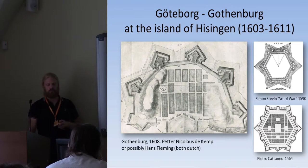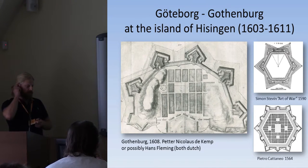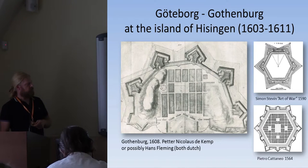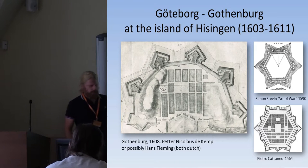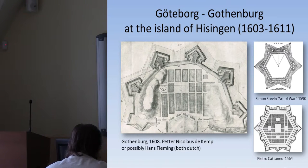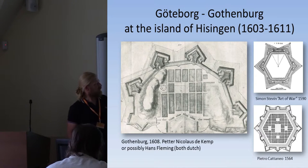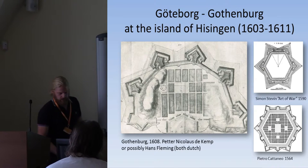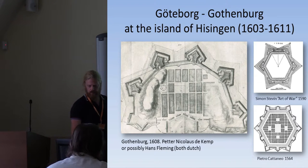The first Gothenburg was at the island of Hisingen. The decision was made in 1603, but building was to start later. It was a typical ideal city — we have Simon Stevin's bastions, exact copies of his ideas from the 1590s, and the city plan traces back to Pietro Cataneo. However, this was never fully built, because in 1611 the Danes came and burned it down, and it was never rebuilt.